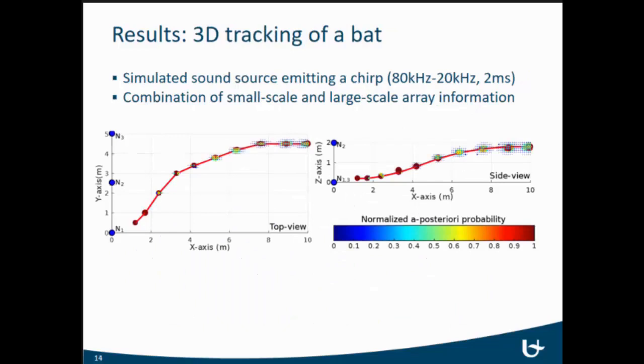Then in simulation, we combined multiple of those nodes. We created 10 vocalizations of the bat—the same vocalization as used before. We got a couple of probabilities for the points. We did the maximum likelihood estimator, and then we traced the path, you can see in red, between all the most likely positions. That is the path that the bat should have taken, localized using three of those small-scale nodes in a large-scale network.